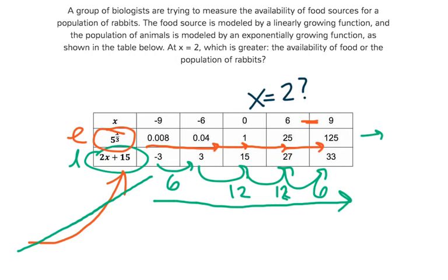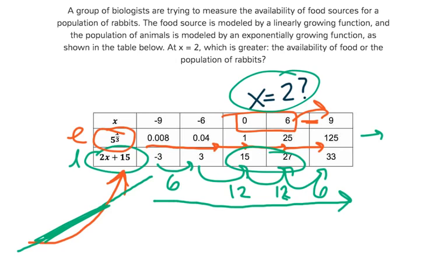But that change, that sudden pop in the exponential growth, doesn't happen until after the x value of 6. Between 0 and 6, our linear function is still larger than our exponential function. And since 2 is an x value between 0 and 6, at x equals 2, our food source, our linear function, is still going to be greater than our exponential.